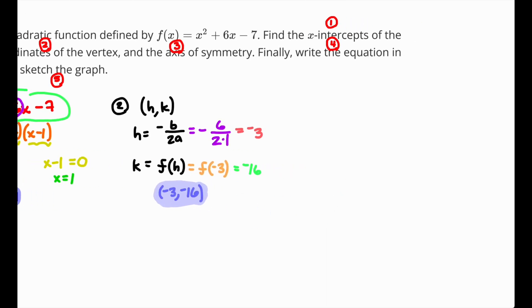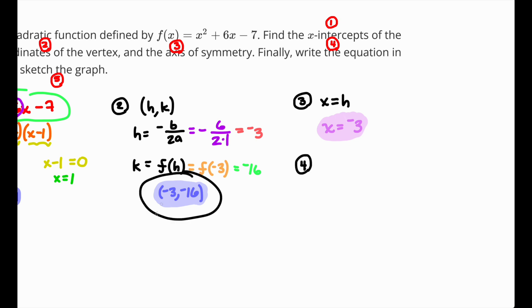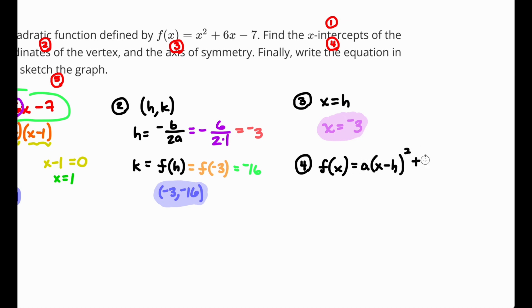The axis of symmetry is x equals h, so x equals negative 3. To write the equation in vertex form, recall the format is a times x minus h squared plus k. We have a equals 1, h equals negative 3, and k equals negative 16.